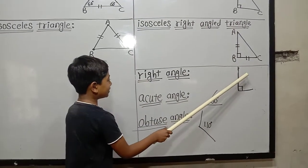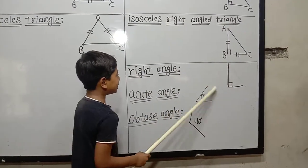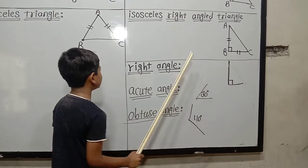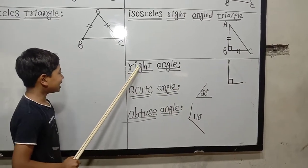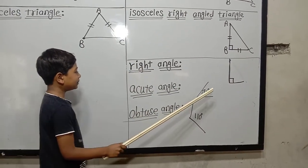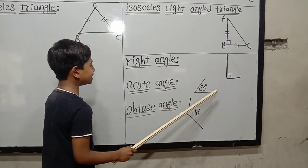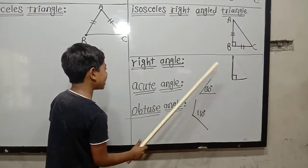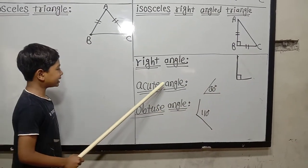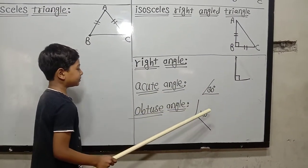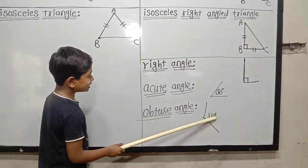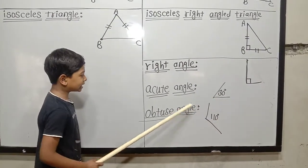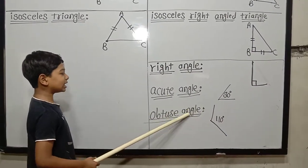Types of angles: if the measure of an angle is 90 degrees, the angle is called a right angle. If the measure of an angle is less than 90 degrees, the angle is called an acute angle. If the measure of an angle is greater than 90 degrees, the angle is called an obtuse angle.